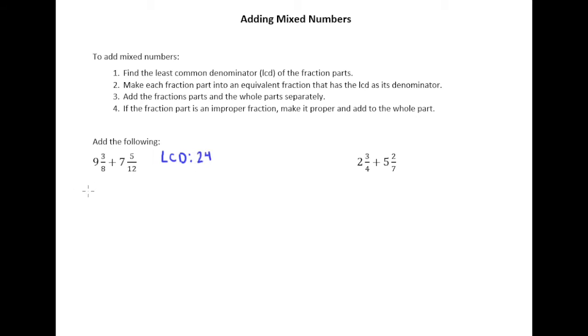So I'll start by rewriting this as 9 and something over 24 plus 7 and something over 24. And so what do we multiply 8 by to make 24? Of course that's 3, so we multiply the top and bottom by 3. And 12 we multiply by 2 to make 24, so I multiply top and bottom of that fraction part by 2.